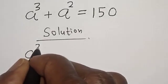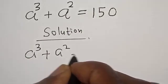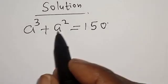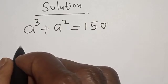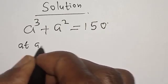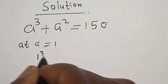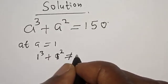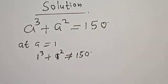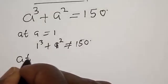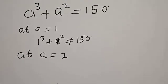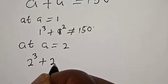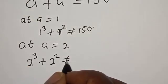A raised to power 3 plus A squared is equal to 150. Let's confirm the root. At A equal to 1, 1 raised to power 3 plus 1 squared is not equal to 150. At A equal to 2, 2 raised to power 3 plus 2 squared is not equal to 150.